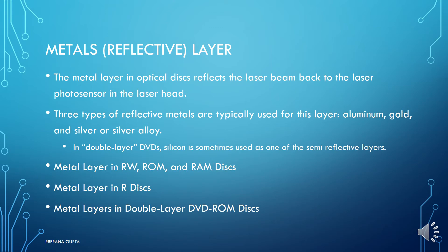The metal layer in an optical disc reflects the laser beam back to the laser photo sensor in the laser head. Three types of reflective materials are typically used: aluminum, gold, and silver or silver alloy, as already seen in the table.